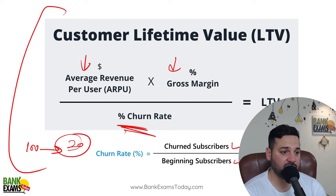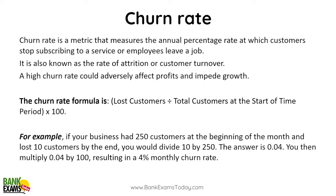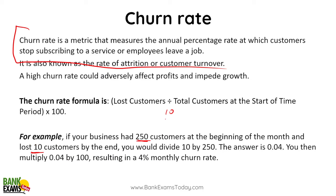Very important formula. What is churn rate? Churn rate is a metric that measures the annual percentage rate at which customers stop subscribing to services, or employees leaving the job — that is churn rate. If there are 250 customers at the beginning of a month and you lose 10 customers, what is the churn rate? It is 10 divided by 250 multiplied by 100 — that's how you get your churn rate. Kitne customers aapke lose hue divided by total customers at the start of the month, multiplied by 100. Please take the screenshot of this slide and save it — it's very important.